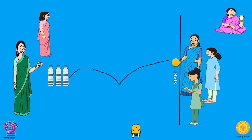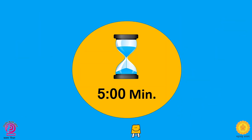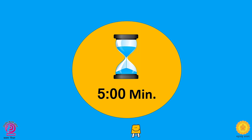Give each mother a chance to throw the ball three times. The mother who drops the maximum number of bottles in three throws will be the winner. Let's pause the video here until this activity is done. We hope all the mothers had fun doing this activity.